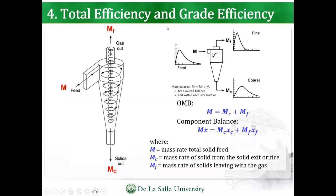For total efficiency and grade efficiency, we use overall material balances. M is the feed, the gas out is MF, and the solids or coarse out is MC. So the total mass equals the mass of solids in the coarse plus the mass of solids in the gas, because some part of the solids may not be separated.